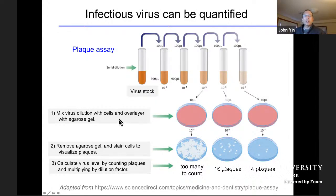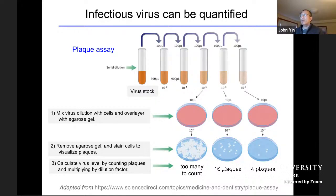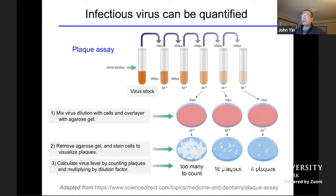The viruses are allowed to reproduce, spread locally, and kill the cells. Then we stain the cells blue, and wherever the viruses killed the cells, there's a little hole called a plaque — a region of dead cells caused by a single virus, which we can now see with the naked eye. By counting those plaques, knowing what volumes we had and how much we diluted the original stock, we can figure out how many particles were in the original stock. This is a key tool we use to quantify infection and characterize how we turn viruses down or up.